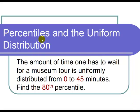This is a video on percentiles and the uniform distribution. The question states, the amount of time one has to wait for a museum tour is uniformly distributed from 0 to 45 minutes. Find the 80th percentile.